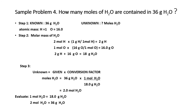Sample problem 4: How many moles of H₂O are contained in 36 grams of H₂O? The known is 36 grams H₂O and the unknown is moles of H₂O. Step 2, molar mass of H₂O: 2 moles of hydrogen times 1 gram per mole gives 2 grams of hydrogen. One mole of oxygen times 16 grams per mole gives 16 grams of oxygen. So 2 plus 16 equals 18 grams — the mass of 1 mole of H₂O. That is the conversion factor.